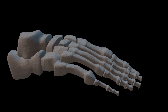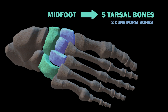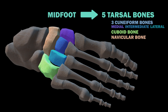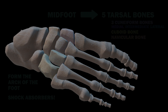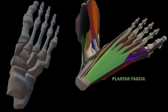On to the midfoot. The midfoot consists of five irregularly shaped tarsal bones. These include the three cuneiforms — the medial cuneiform bone, the intermediate cuneiform bone, and the lateral cuneiform bone — as well as the cuboid bone and the navicular bone. The bones of the midfoot form the arch of the foot and act as shock absorbers. These bones connect to the bones of the forefoot and hindfoot via muscles and a ligament called the plantar fascia.